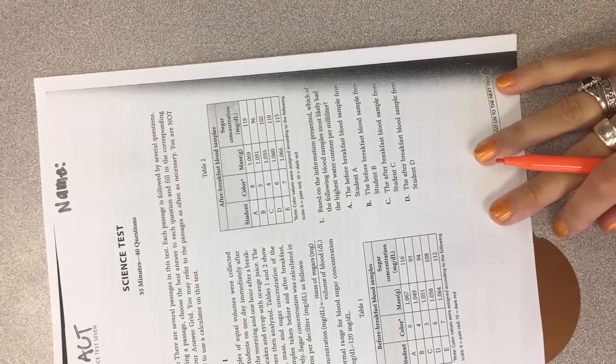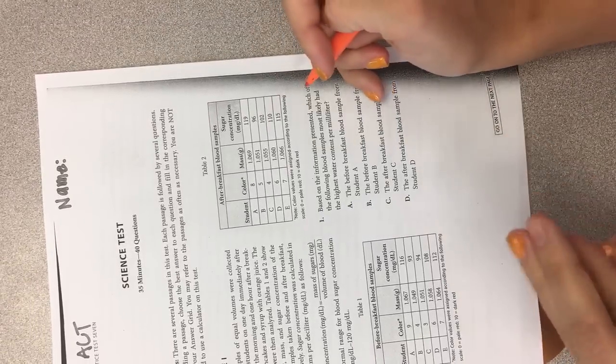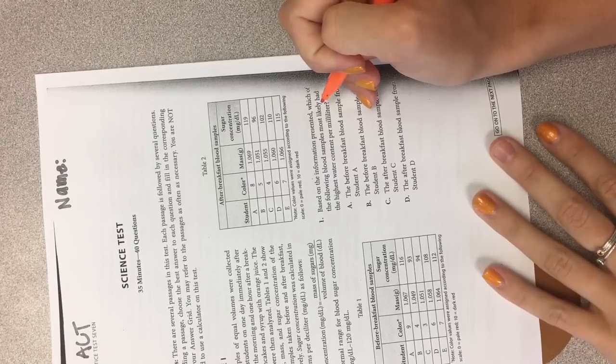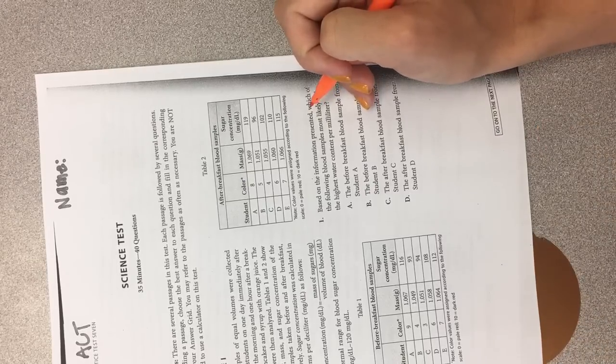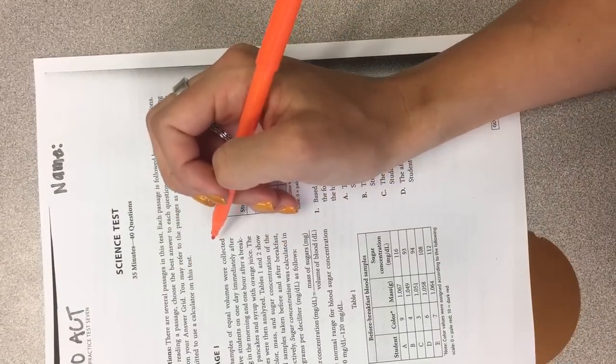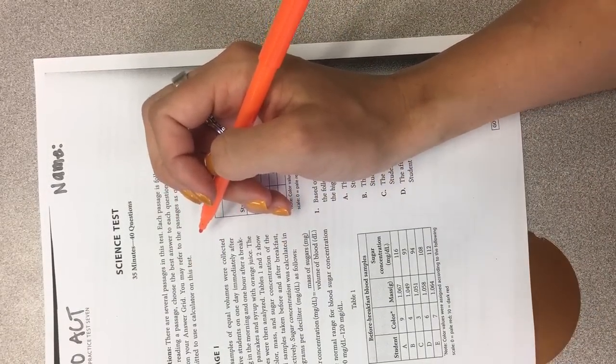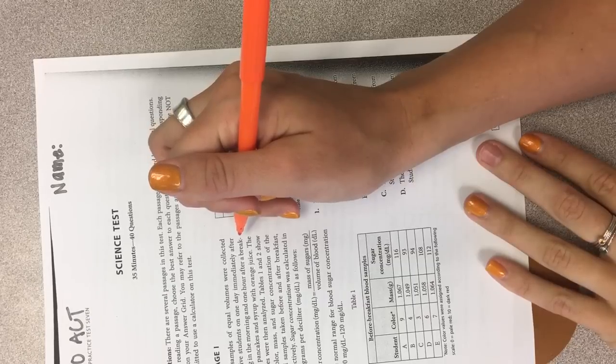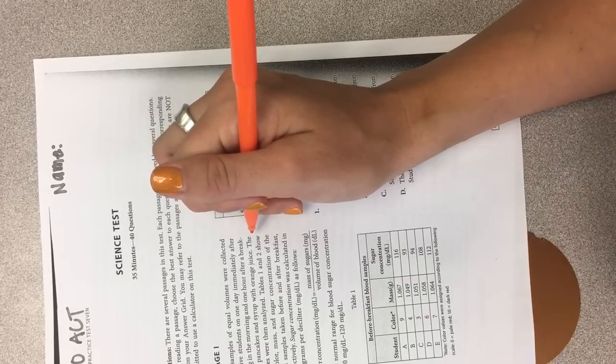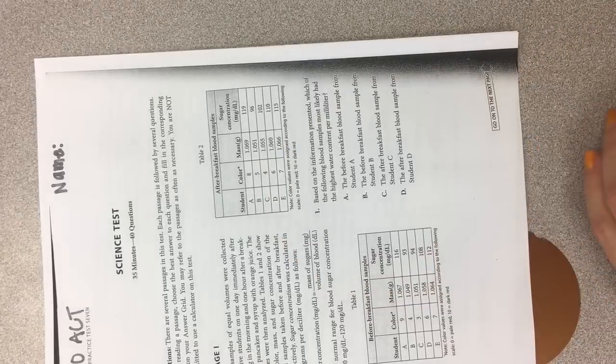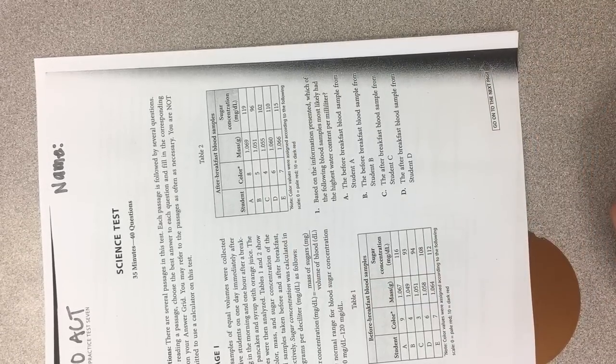Number one, based on the information presented, which of the following blood samples most likely had the highest water content per milliliter? Blood samples of equal volumes were collected from five students on one day immediately after waking in the morning and one hour after a breakfast of pancakes and syrup of orange juice. Table one shows the color, mass, and sugar concentration of blood samples taken before and after breakfast.